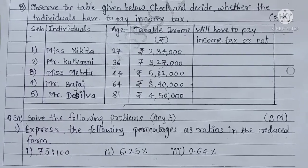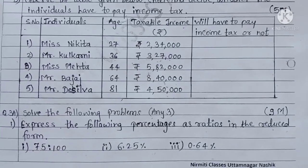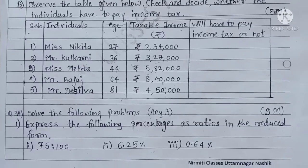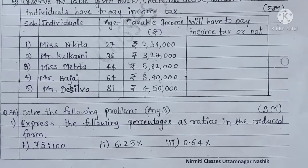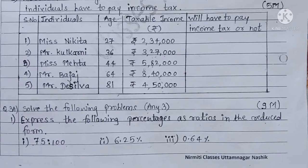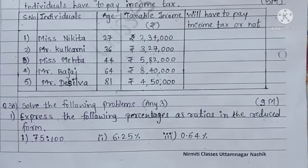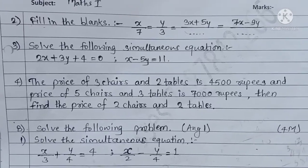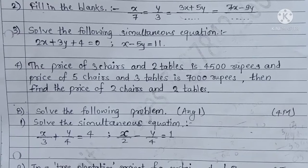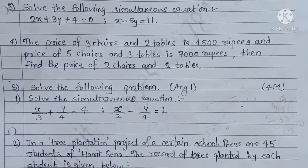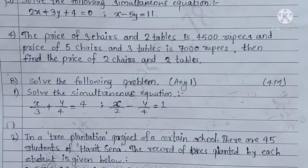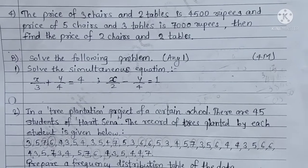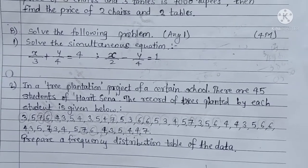Question three A is solve the following problems, any three. The first question is express the following percentages as ratios in reduced form. Next is fill in the blanks, third is solve the following simultaneous equations, and fourth is a given equations problem. Question number three B is solve the following problem, any one.